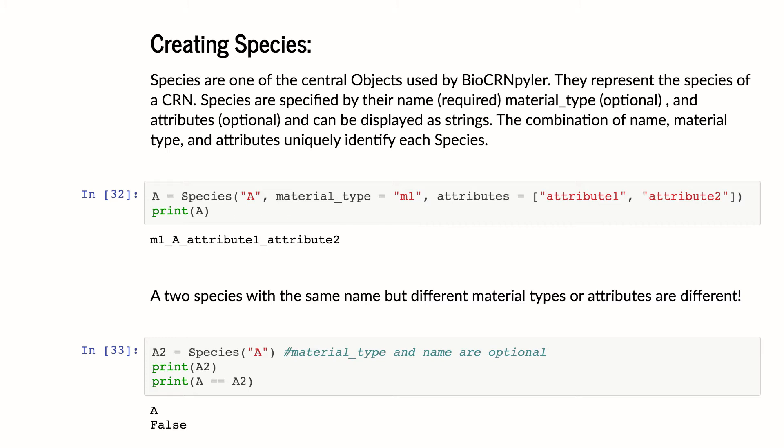So this is really for your convenience. You could write out for their names, you know, gene X, transcript X, protein X. Maybe you want to call them all X and just change their material type.